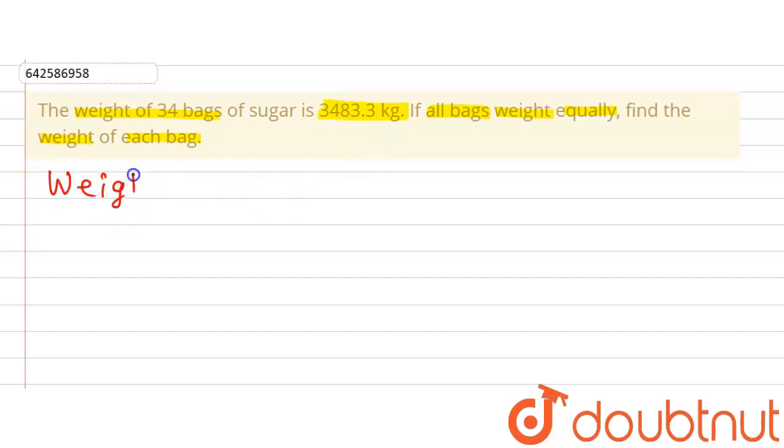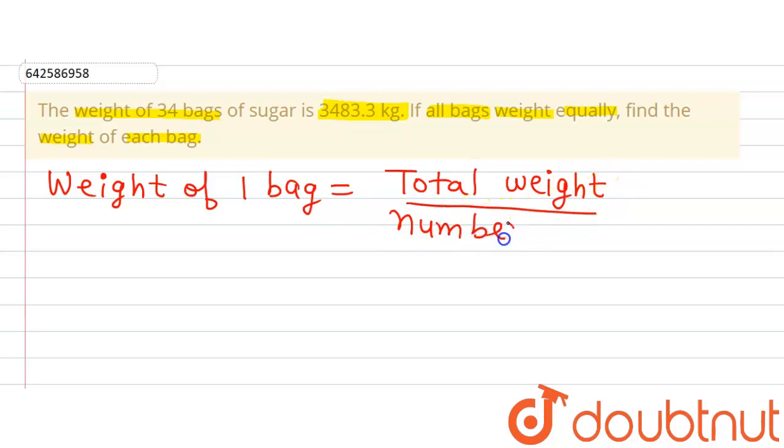Weight of one bag will be equal to total weight divided by number of bags. So total weight of a certain number of bags and those number of bags in the denominator.